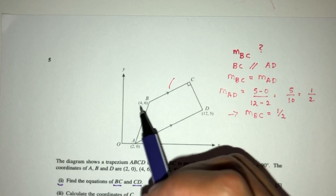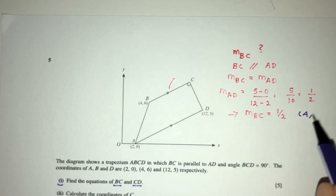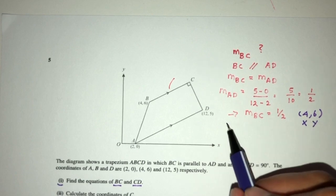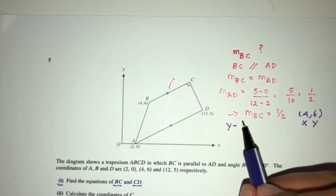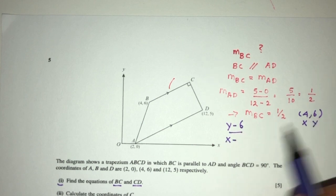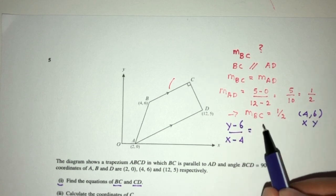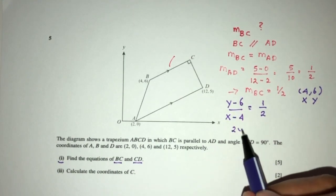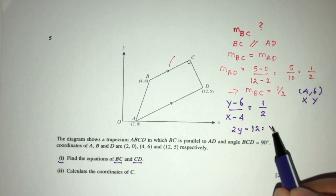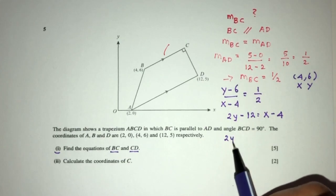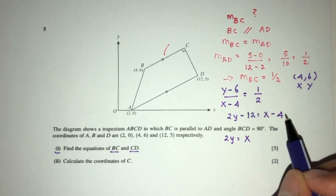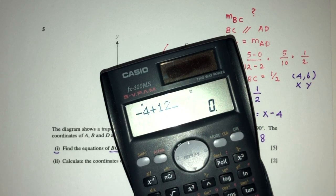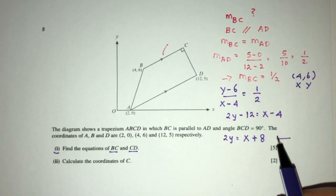Now we can use the gradient and the passing point, which is (4, 6), to find the equation of BC. This will be my X value and my Y value. So Y minus the corresponding value over X minus its corresponding value has to be 1 over 2, which is the gradient. Now we simply cross-multiply: you will have 2Y minus 12 is equal to X minus 4. So 2Y equals X minus 4 plus 12, which is plus 8. So this will be the equation of BC.